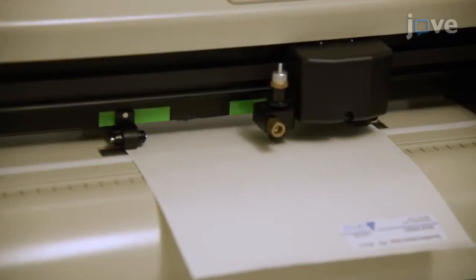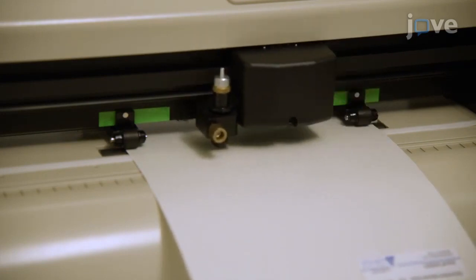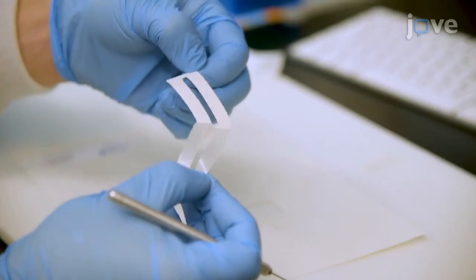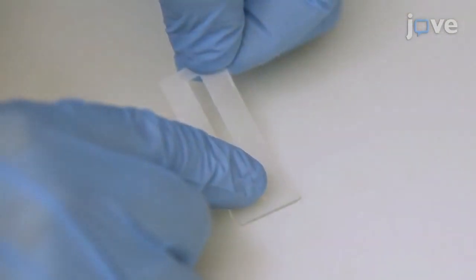Use an electronic cutter to cut a 41 by 2.25 millimeter channel into a 50 by 20 millimeter piece of double adhesive sheet and peel off the plastic side of the protective cover. Align the edges of the piece with the edges of the quartz slide.